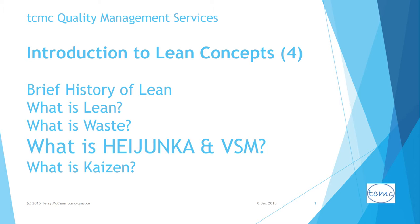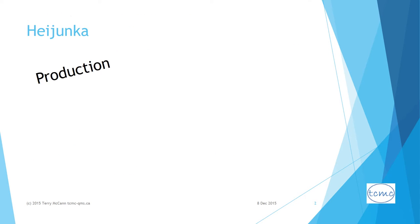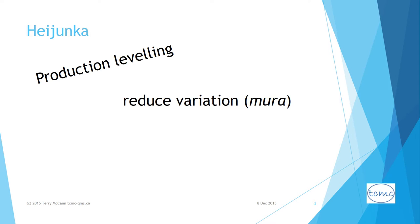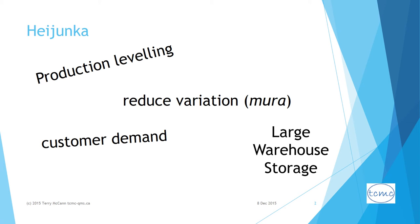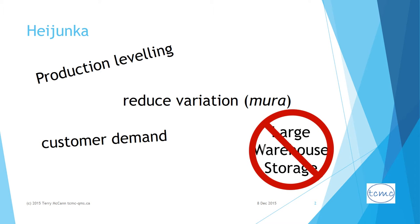Heijunka, or production leveling, is what an organization does to smooth out the volume and mix of the daily production schedule in order to reduce variation, or Mura, on a daily basis as much as possible, and provide the customer with only as much as they really need when they need it. The process owner only draws as much raw material and resource as is needed to meet customer demand.